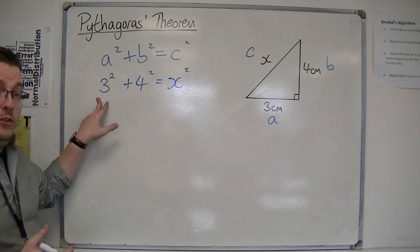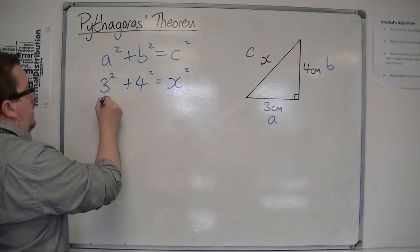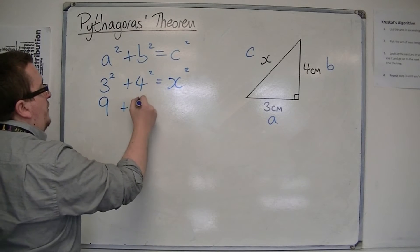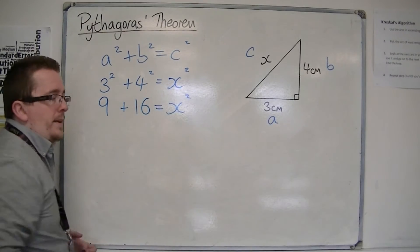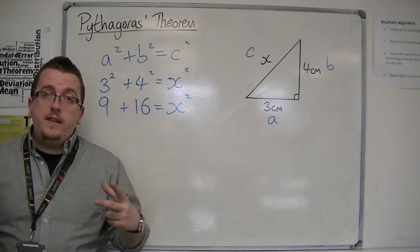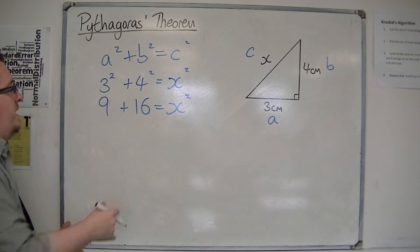So, I've got 3 squared, which is 9, 4 squared, which is 16, and you've got that X squared. Now, we have the 9 and the 16 make 25.